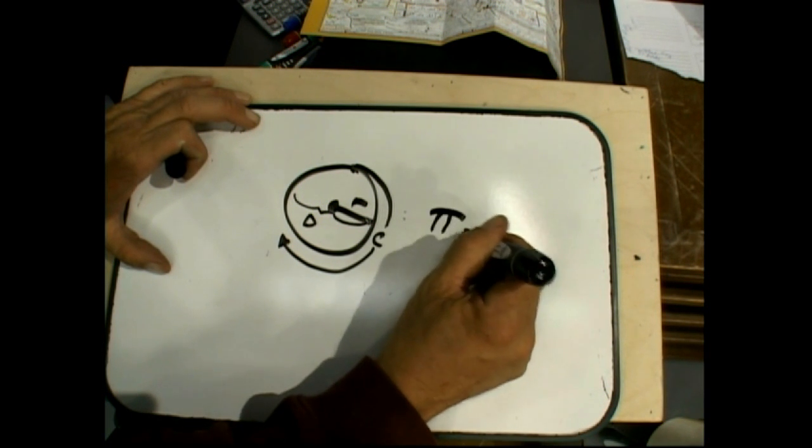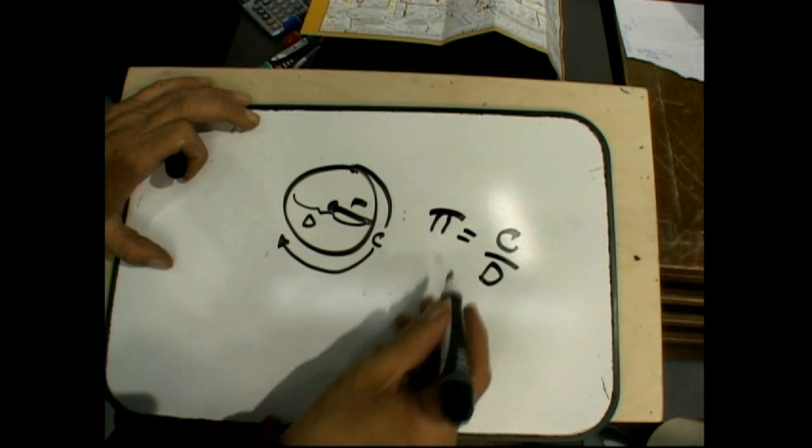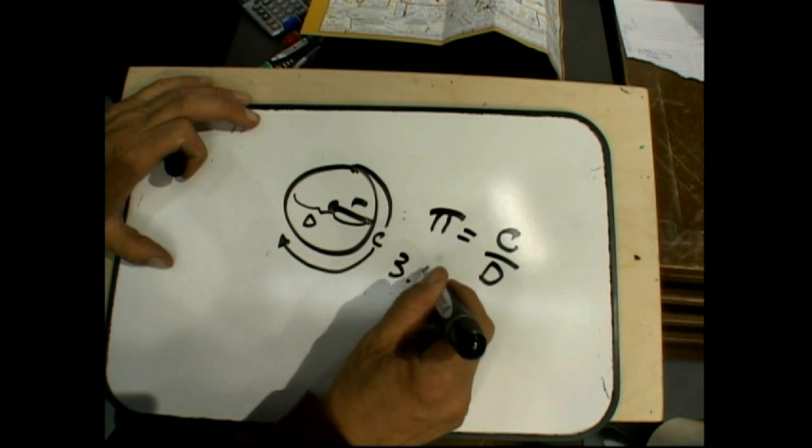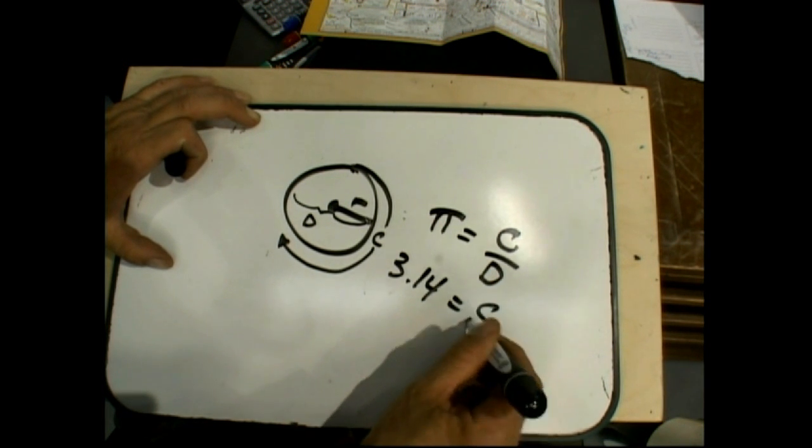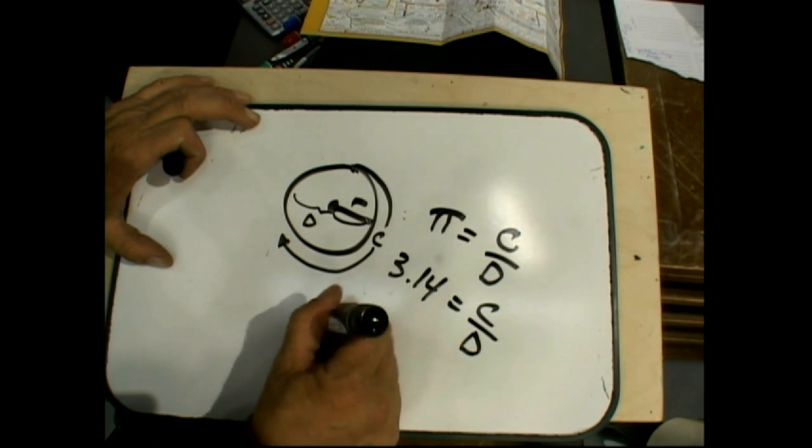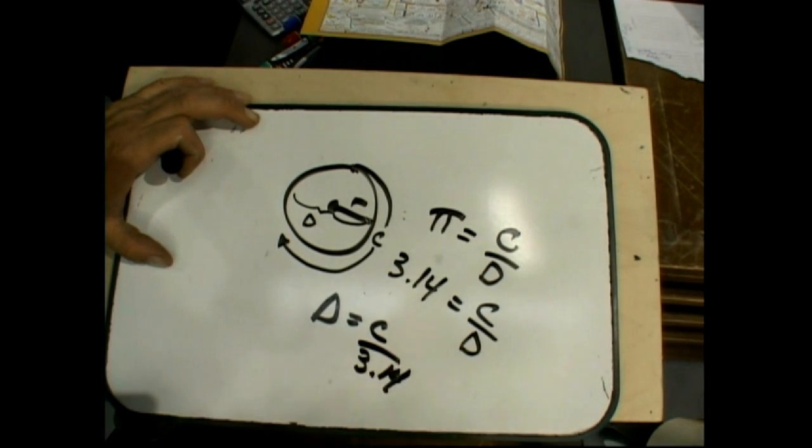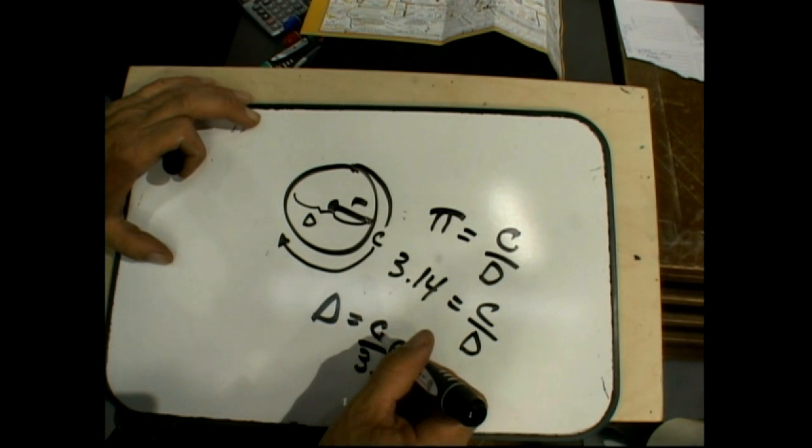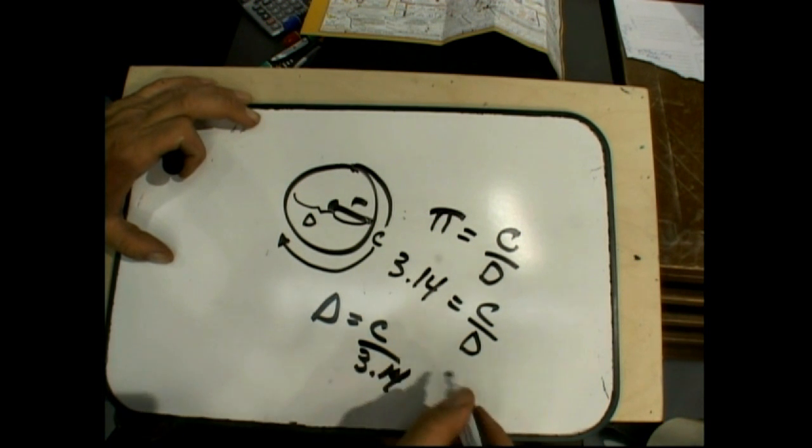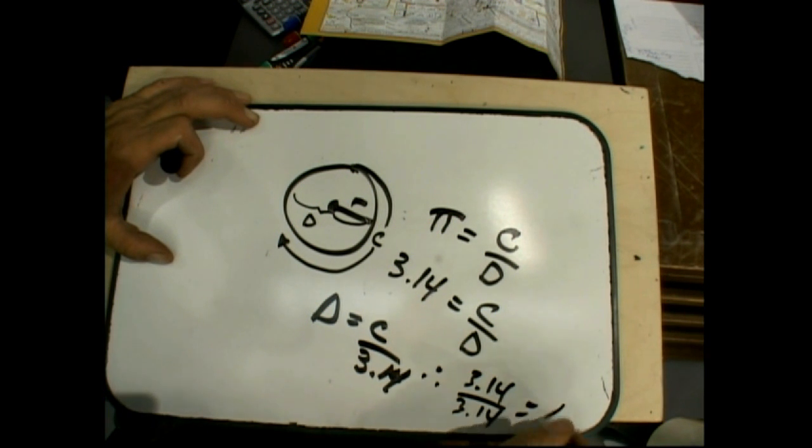Pi equals the circumference divided by the diameter. Now, if we know that pi is 3.14 equals C over D, we can algebraically arrange this so that D equals C over 3.14. So look, if circumference is 3.14,